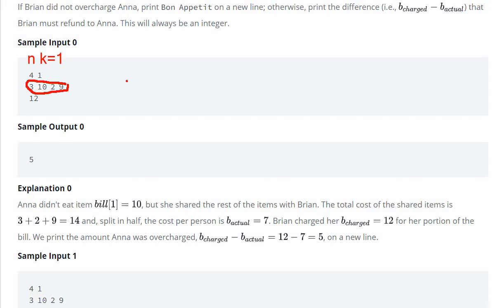The shared price is 3 plus 2 plus 9 equals 14 divided by 2, which equals 7. This is the bill which Anna and Brian have to pay.